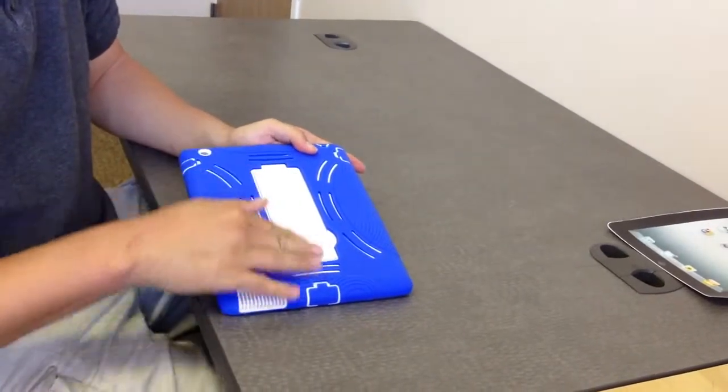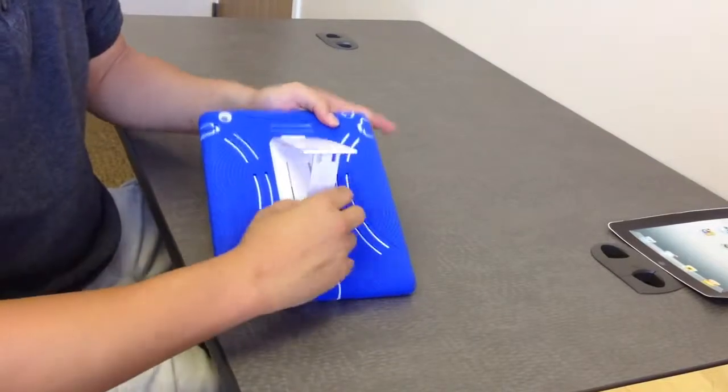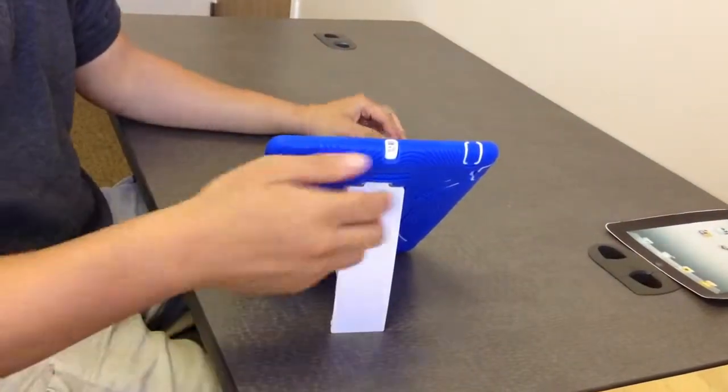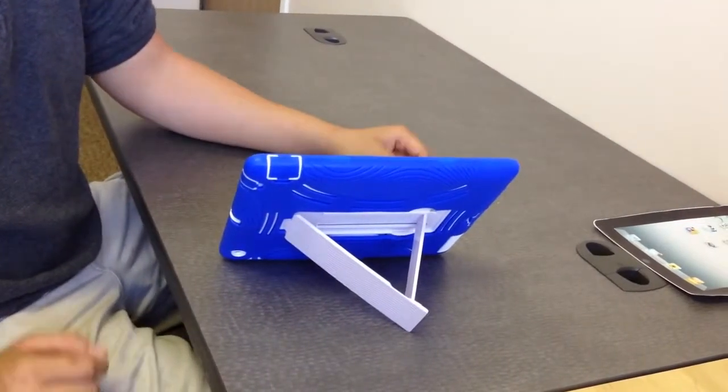You notice this rectangular white strip right here on the back? It's actually the stand. When you pull it out, it acts as a stand for vertical and horizontal. So easy to use, right?